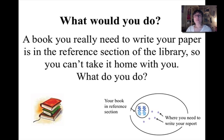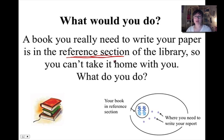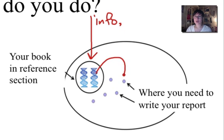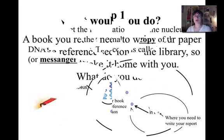So the question is: how do we get the information from inside the nucleus to the ribosomes? Think about it this way — if a book you really need is a reference book in a library, and reference books cannot be removed from the library, what do you have to do to get that information to your house? This is essentially the same question, or it's analogous to the problem we have in the cell. Our info is housed inside the nucleus but we need it to go from the nucleus to the ribosome. So how do we go from here to there?